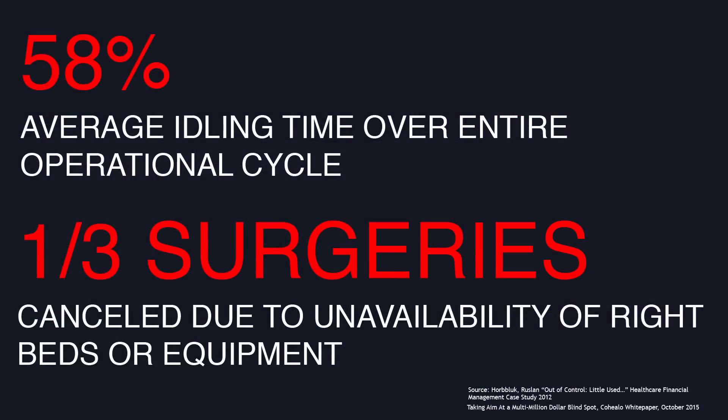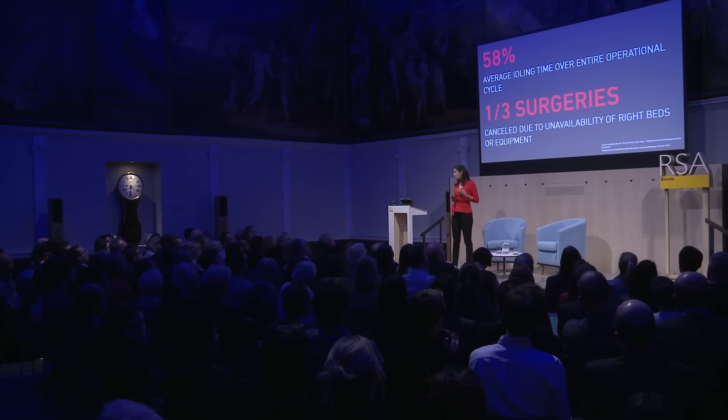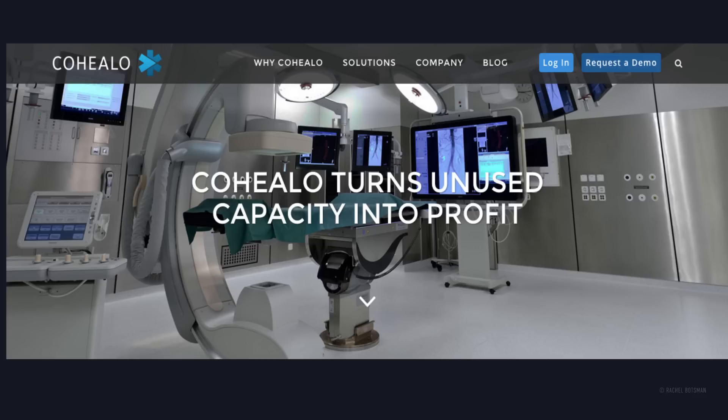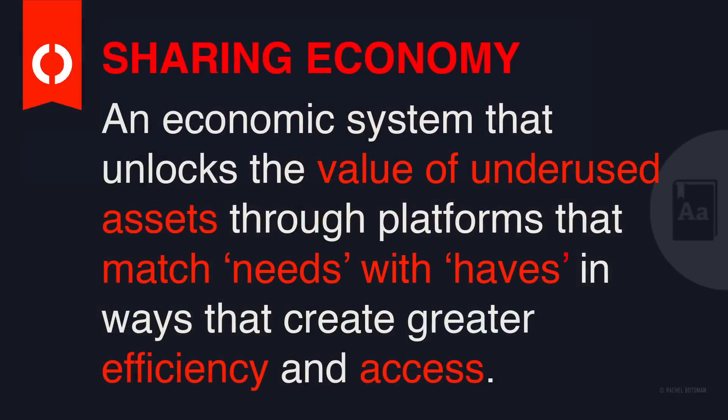What he discovered was that the average piece of equipment will sit idle for 58% of its entire lifecycle, and this results in a third of all surgeries that cannot be performed because there isn't equipment available. So he created a platform called Cohilo, now named one of the most innovative health companies in the States. It takes the unused capacity of expensive health equipment and redistributes it amongst different hospitals. He's managed to take the capacity of hospital equipment from 48% to 70% in the course of 18 months. So here you have two very different examples — home swapping and getting hospitals to share equipment — both great examples of the sharing economy.